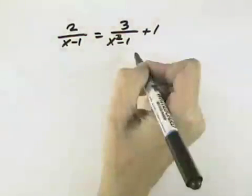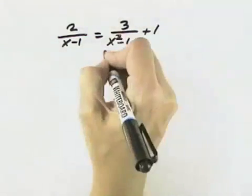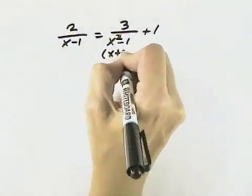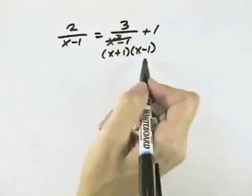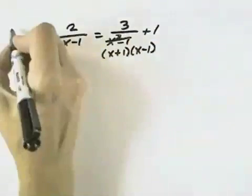Here we want to solve this rational equation. To do so, we want to get rid of our fractions. That means we need to know what our least common denominator is, so I need to factor the denominator. I can see that x plus 1 and x minus 1 are the two factors in our least common denominator.